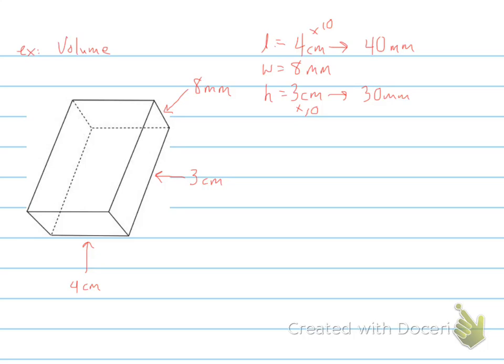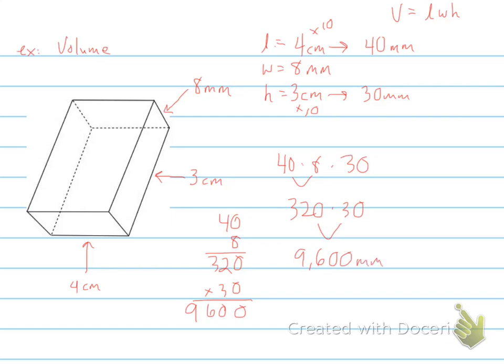And to find volume, we're doing length times width times height, so we can do 40 times 8 times 30, so 40 times 8, we get 320, and then 320 times 30, that would equal 9,600 millimeters. And this volume, it's three-dimensional, so this would be cubed, and that would be our final answer.